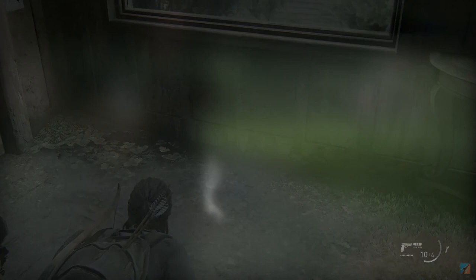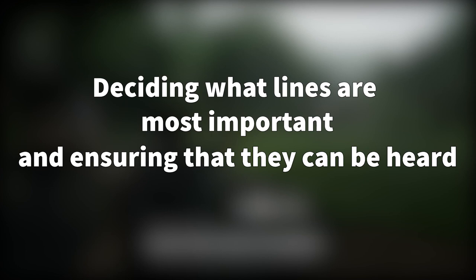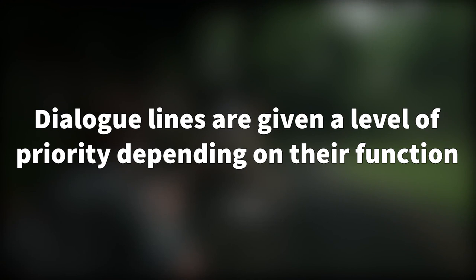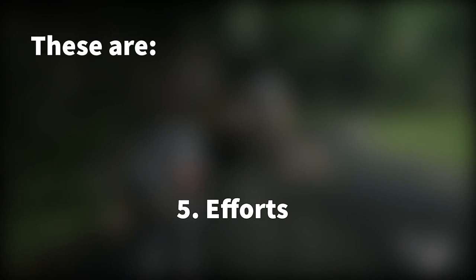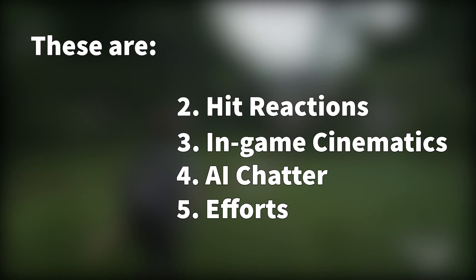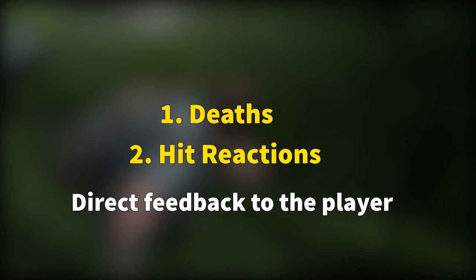The last stage is priority: deciding what lines are most important and ensuring that they can be heard clearly over everything else. Dialogue lines are given a level of priority depending on their function. From lowest to highest, these are: efforts, exertion noises, and grunts; AI chatter; in-game cinematics; hit reactions; and deaths. The last two are the highest priority because they provide direct feedback to the player regarding their actions — whether an attack has been successful and whether an enemy is still a threat.